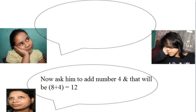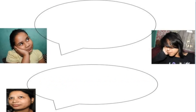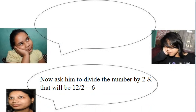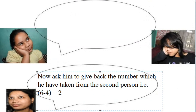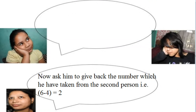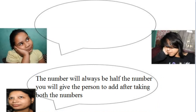Now ask him to add number 4, and that will be 8 plus 4 equals 12. Now ask him to divide the number by 2, and that will be 12 halved equals 6. Now ask him to give back the number which he has taken from the second person — that is 6 minus 4 equals 2. The number will always be half the number you give the person to add, after taking both the numbers.